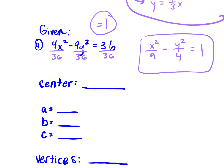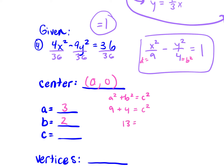So our standard form is x squared over 9 minus y squared over 4 equals 1. Our center is 0, 0. Our a squared is 9, so a is 3. B squared is 4, so b is 2. Using a squared plus b squared equals c squared: 9 plus 4 equals c squared, so 13 equals c squared, meaning c is the square root of 13.